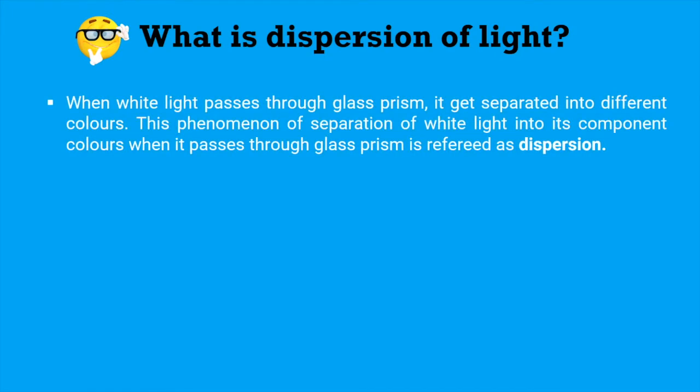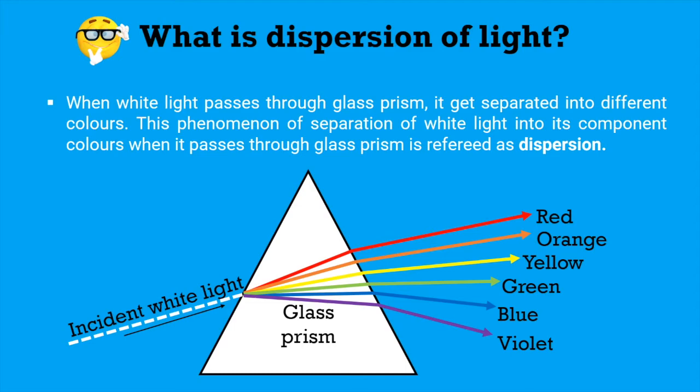When white light passes through glass prism, it gets separated into different colors. This phenomenon of separation of white light into its component colors when it passes through glass prism is referred as dispersion. Here is the schematic of this dispersion. When incident white light passes through glass prism, it gets split into red, orange, yellow, green, blue and violet. This is called dispersion.